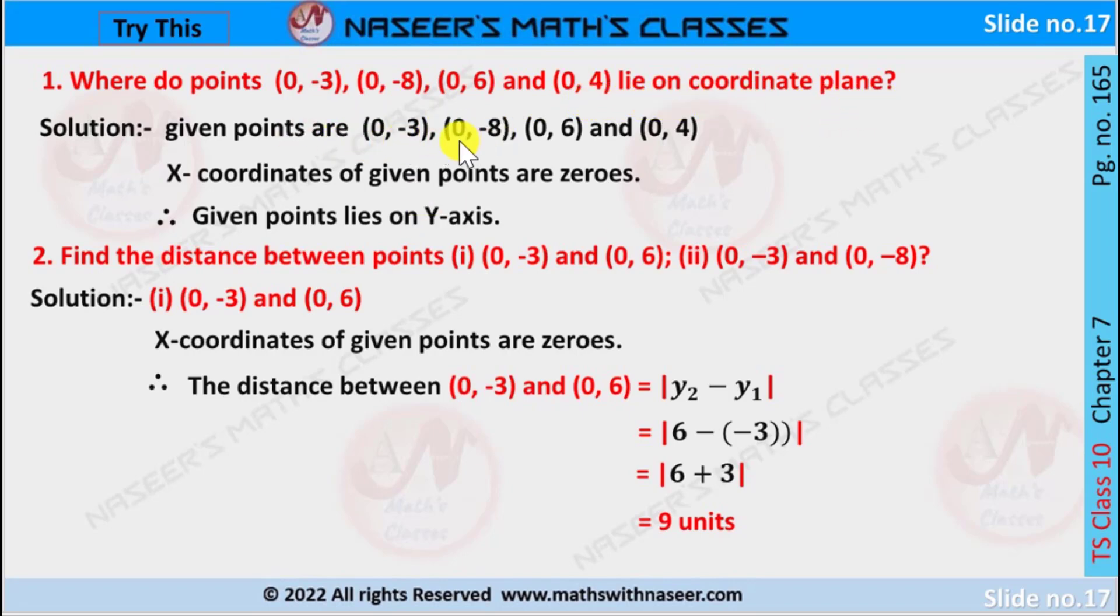Given points are (0, -3), (0, -8), (0, 6) and (0, 4). Here, all x-coordinates are 0, so the given points lie on the y-axis. Next, second one: find the distance between the point (0,